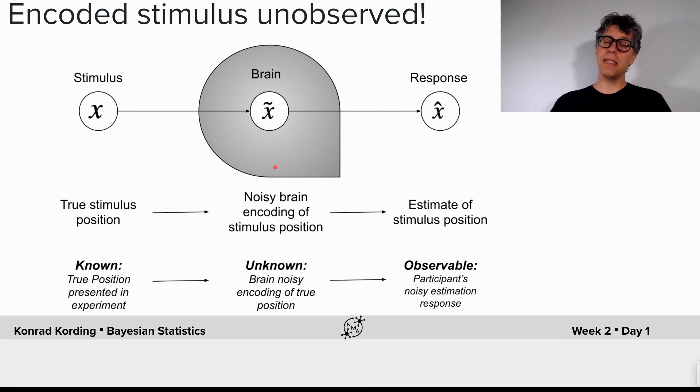And what we will have to do, just as in the case of causal inference, is consider all possible x tilde that could arrive at the brain. And by considering all of them according to their probability, we can do the right thing again.